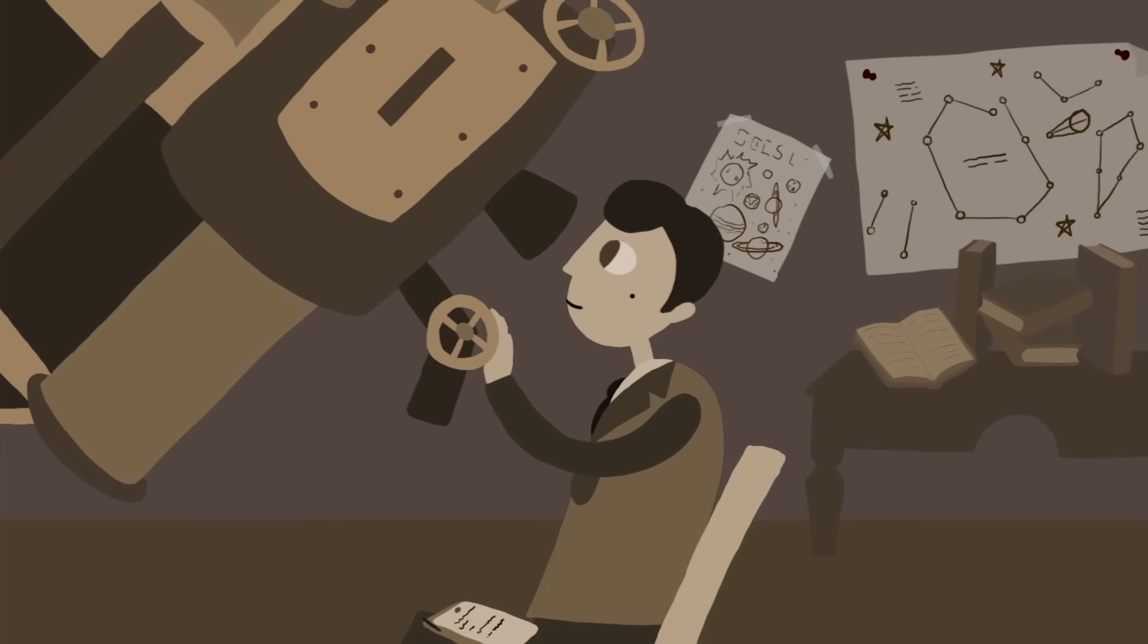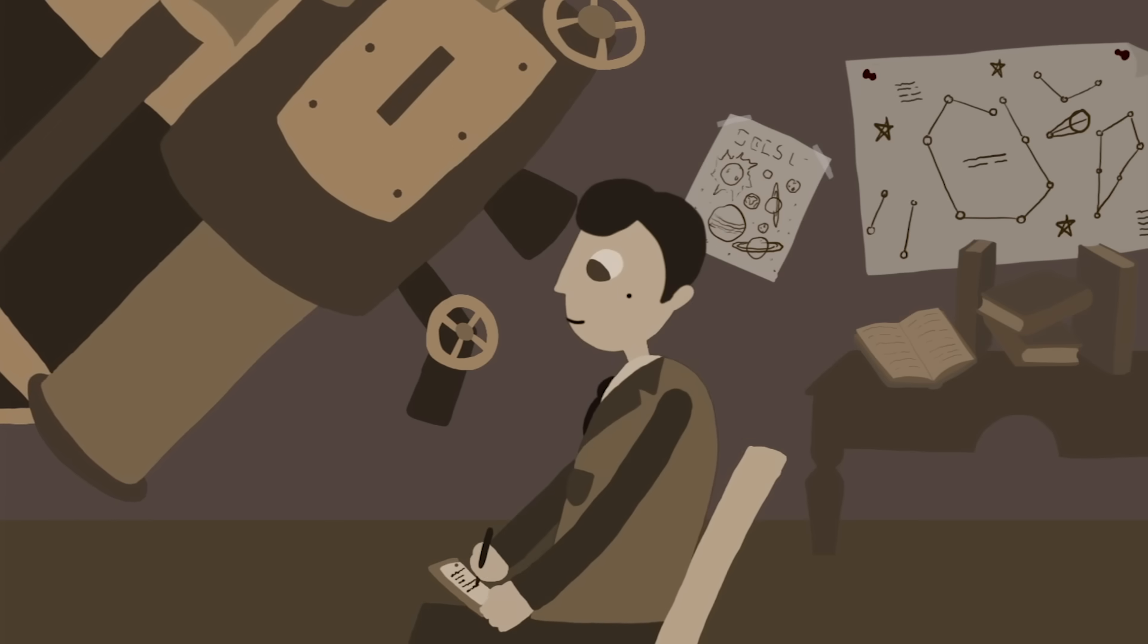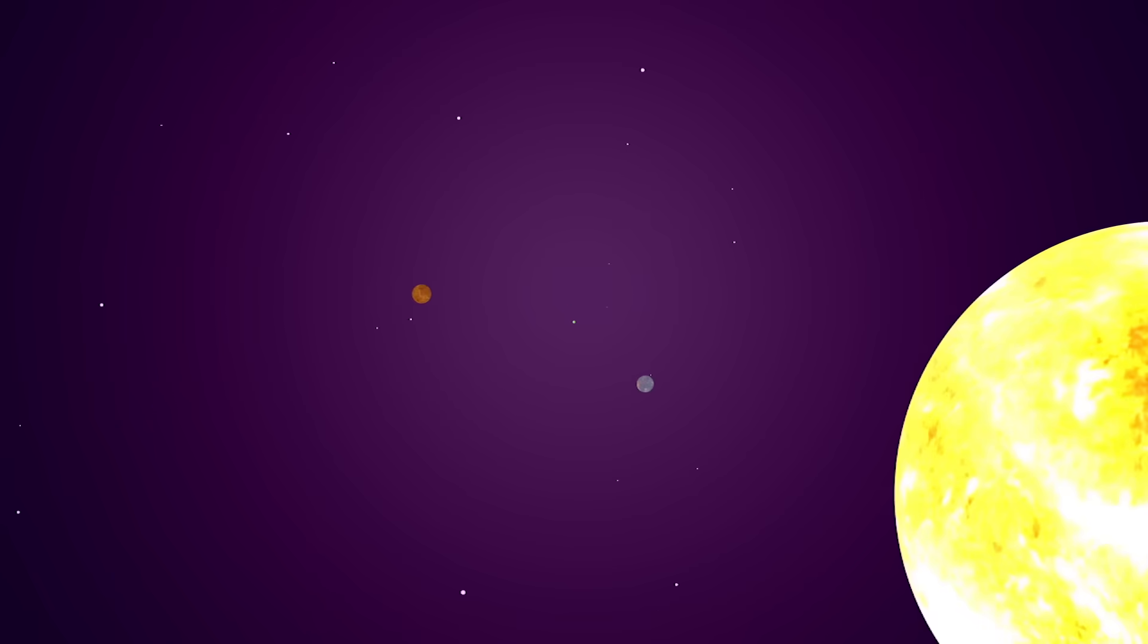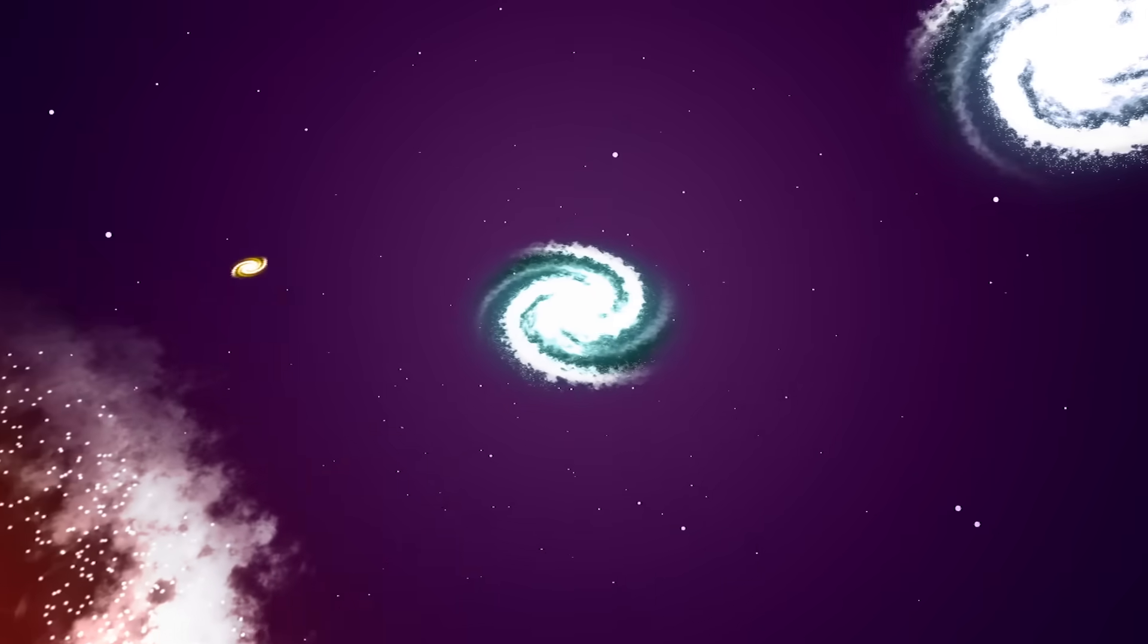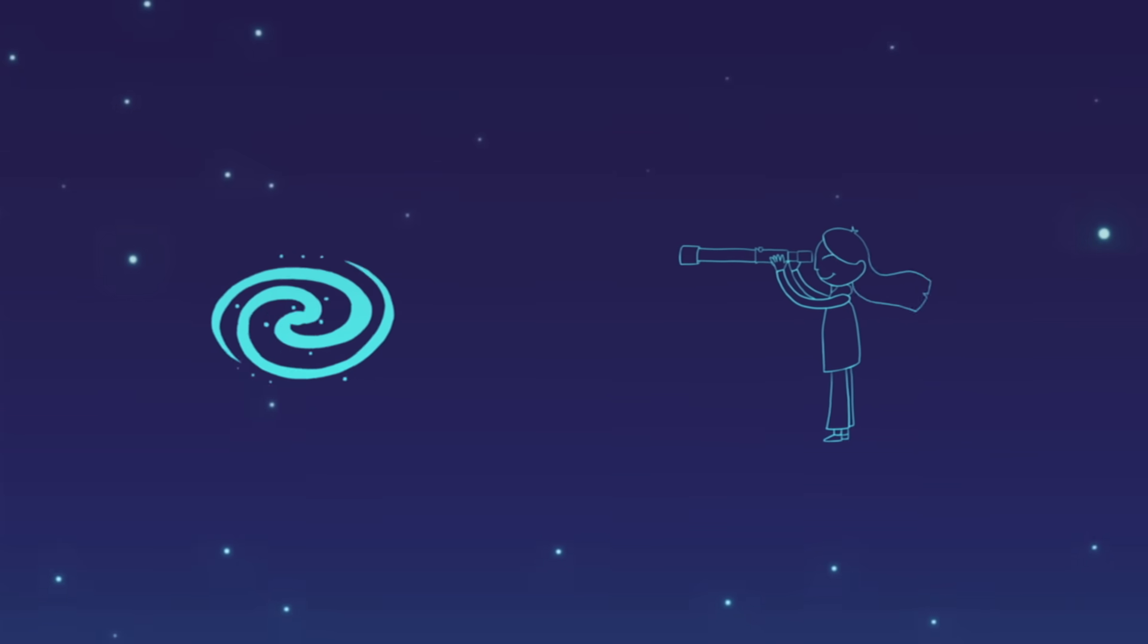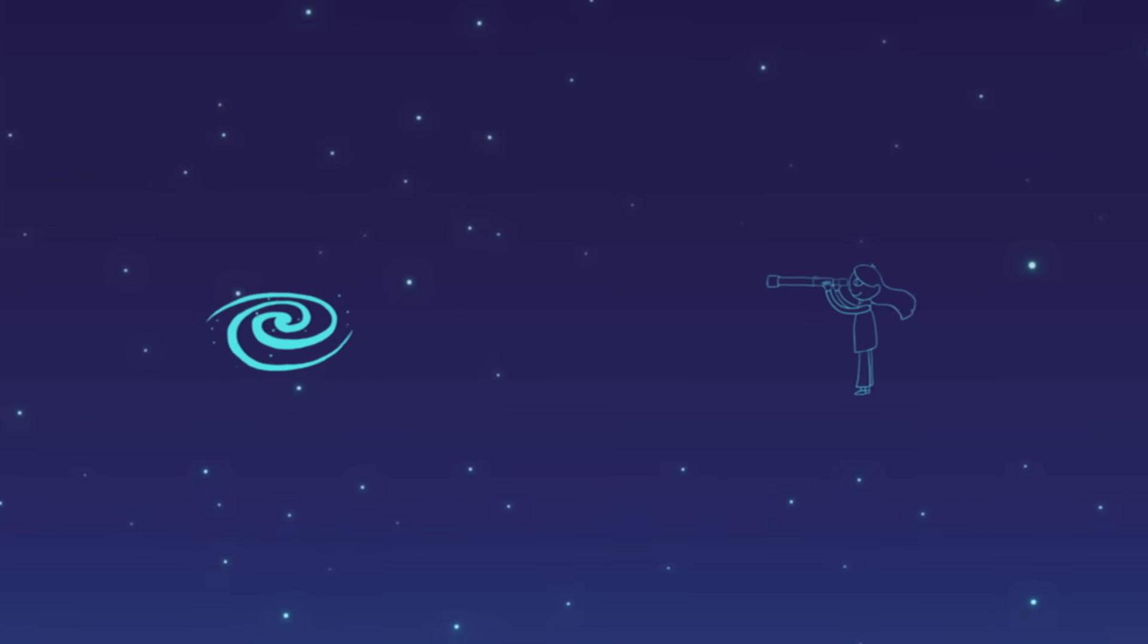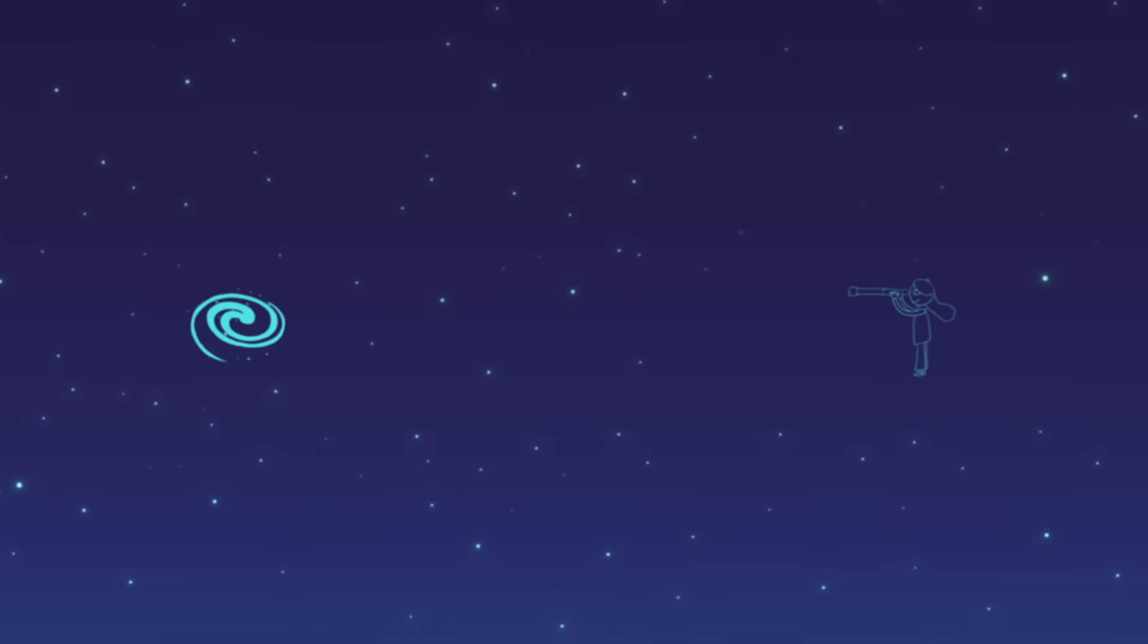In 1929, Edwin Hubble's astronomy observations gave us a definitive answer. His survey of the night sky found all faraway galaxies recede or move away from the Earth. Moreover, the further the galaxy, the faster it recedes. How can we interpret this?